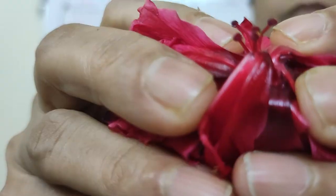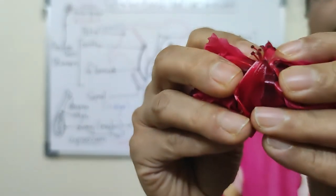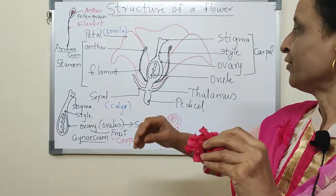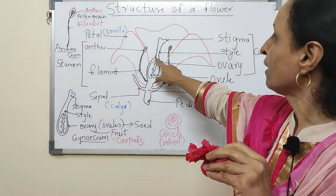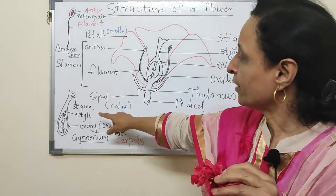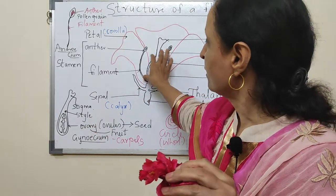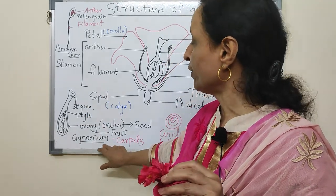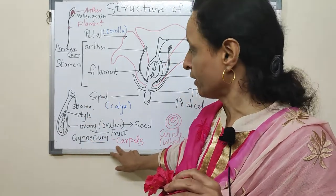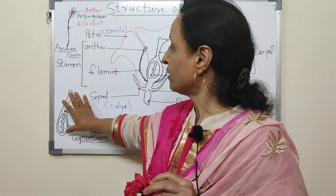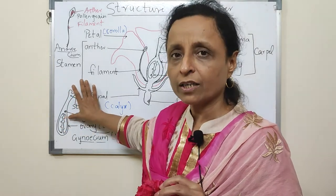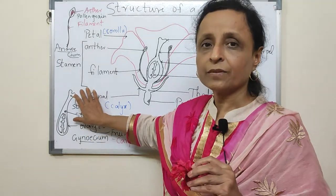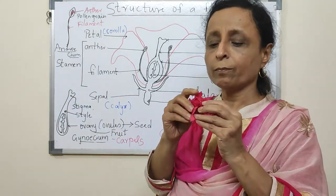The innermost whorl is the gynoecium. Here you can see the gynoecium — this is the female reproductive structure. The female reproductive structure consists of stigma — the topmost part is known as stigma.